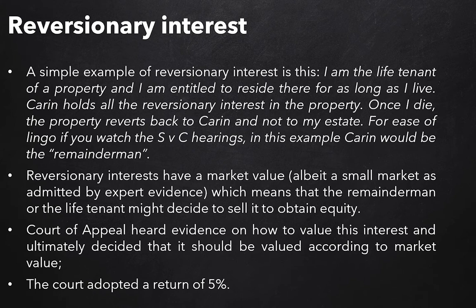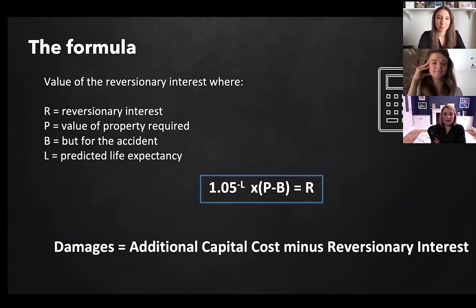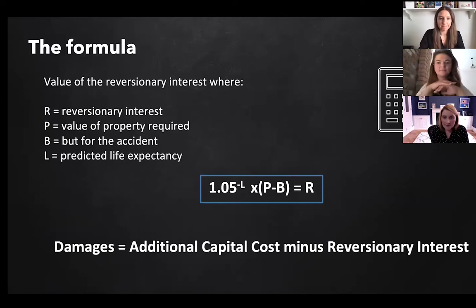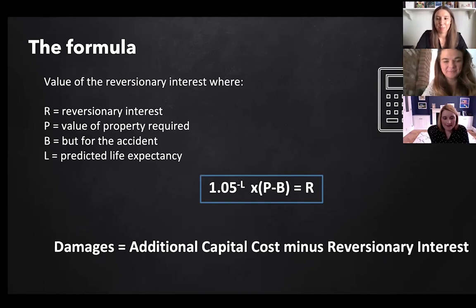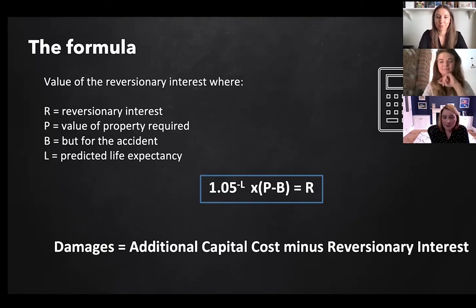Our brief foray into property law has now come to an end, and we can actually have a look at how you do it. What you're doing is looking at the value of the property, taking away the value of the reversionary interest, and then — bearing in mind the life multiplier — creating the correct calculation of the capital sum which represents the loss. Karen can explain the formula, and although the explanation is complicated, it has actually resulted in a reasonably simple way of calculating these losses.